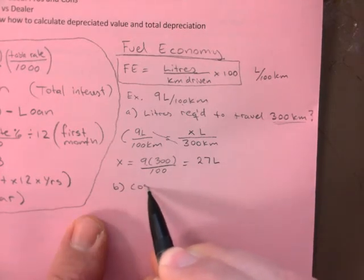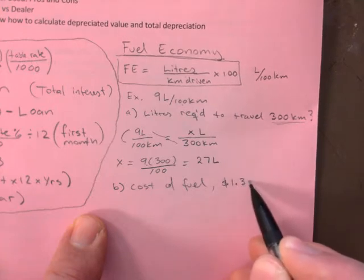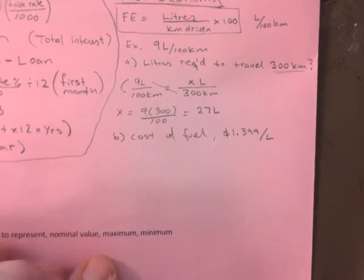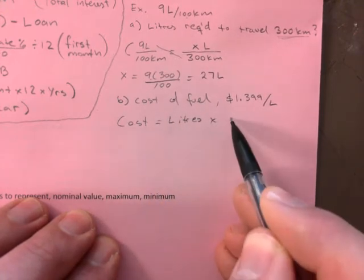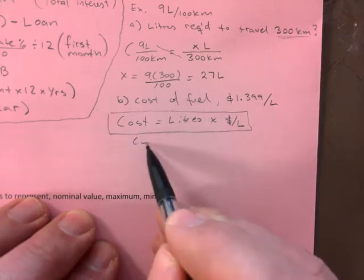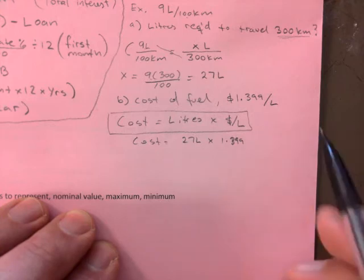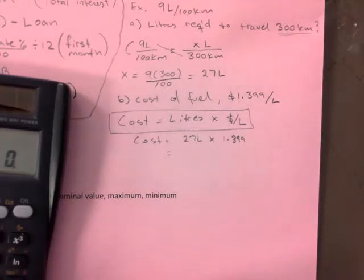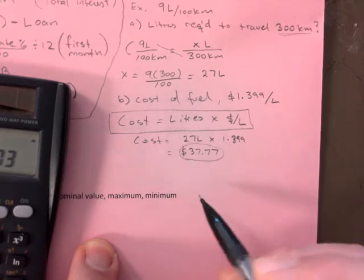And now you can do the cost. Cost of fuel. If fuel is, what is it right now? 399, I think. One point, like, I think it's 1.399 per liter right now. So if you wanted the cost, you just take the liters times the dollar amount per liter. This is actually a formula. I'm going to box that in. So the cost here would be, in this case, 27 liters times 1.399. So it's usually a two-step scenario. Let's do this. And that is $37.77 to travel these 300 kilometers.